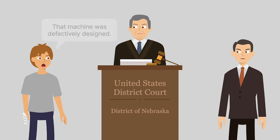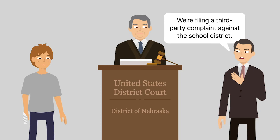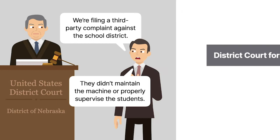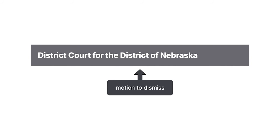Broadhead filed a third-party complaint against the Ralston School District. Broadhead alleged that the school district failed to adequately maintain the machine and to properly supervise students who were using it. The school district moved to dismiss Broadhead's third-party complaint. Broadhead opposed the motion.